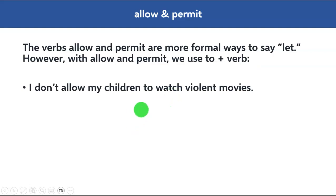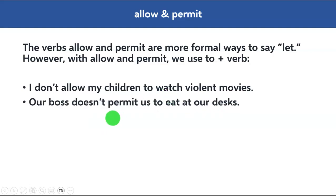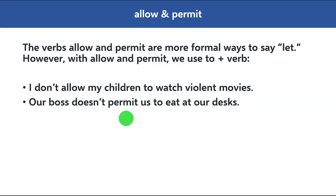Let's take a couple of examples. I don't allow my children to watch violent movies — you're using the word 'to' with the verb 'watch'. Our boss doesn't permit us to eat at our desks. So that is the difference: with 'let' you don't use 'to', but with allow and permit you use 'to' plus the verb form.